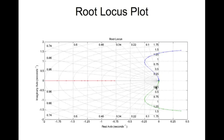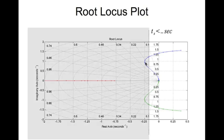As you increase K, the branches travel across the complex plane. Notice that when K starts at zero the system is unstable, and at some point the root locus crosses the imaginary axis — that's where the system becomes stable. If the goal is just to make the system stable, we need to choose values of K between where the root locus crosses the imaginary axis and K approaching infinity. We can place our closed-loop poles anywhere along that segment.